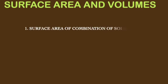Hello children. We are in a chapter called surface area and volumes — it is the last chapter in mathematics. In this chapter there are four subunits. The first subunit is surface area of combination of solids. We already know what combination of solids means: if two or more solids combine together, we call them a combination of solids.